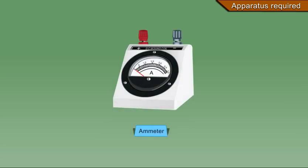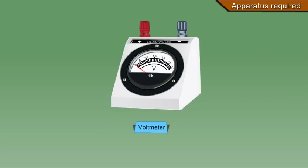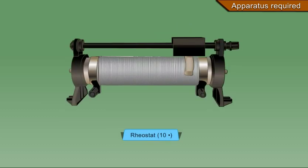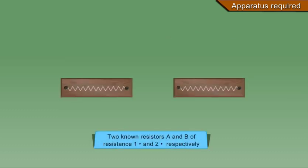Ammeter, voltmeter, rheostat 10 ohm, two known resistors A and B of resistance 1 ohm and 2 ohm respectively, sandpaper.